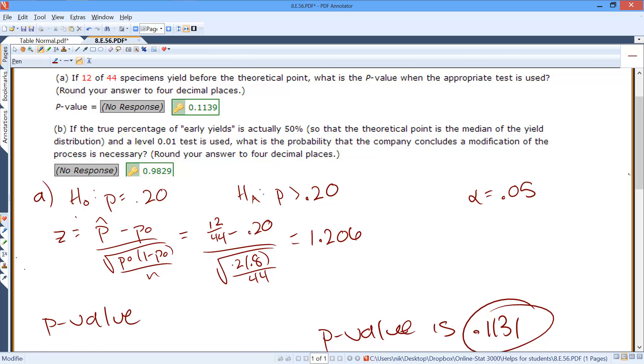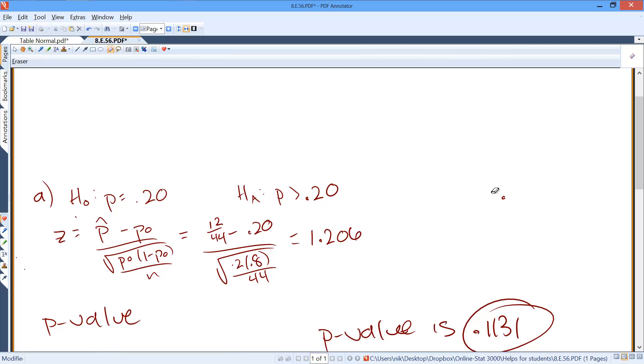Okay, Part B. If the true percentage of early yields is actually 50%, at a level 0.01 test used, what is the probability that the company concludes a modification in the process is necessary?